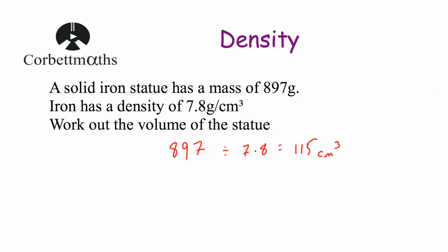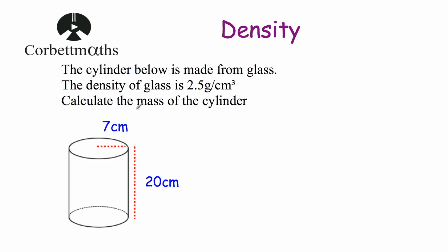Our last example says the cylinder shown is made of solid glass. The density of the glass is 2.5 grams per centimetre cubed — in other words, each centimetre cubed of glass has a mass of 2.5 grams. We've been asked to calculate the mass of the cylinder. To find the mass, we first need to find the volume, and then since each centimetre cubed has a mass of 2.5 grams, we multiply the volume by 2.5 to find the total mass.